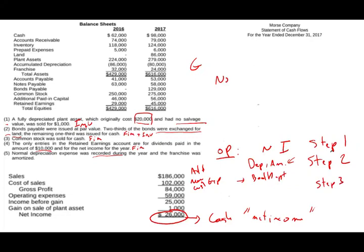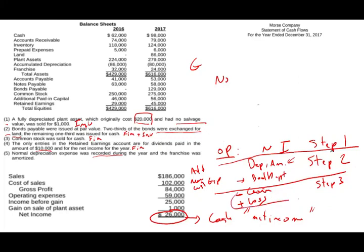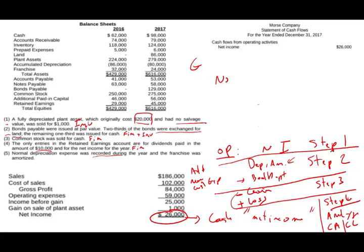Net income is $26,000. Now I'll make adjustments. For step two, depreciation and amortization are not listed explicitly, so we have to figure them out. For amortization: the franchise account went from $32,000 to $24,000. Since we did not sell anything, we simply amortized $8,000. This is a non-cash expense, so we add $8,000. The company debited amortization expense and credited franchise for $8,000.